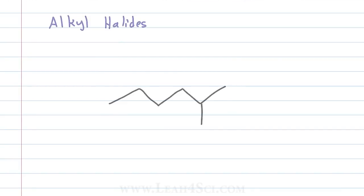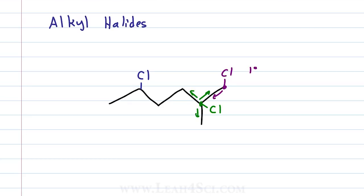Alkyl halides are classified the same way. Say I have a molecule with multiple chlorine atoms and I want to identify the degree of substitution of each one. Starting with the purple chlorine on the right — putting the pencil down, I have just one line, one bond to carbon, making it a primary alkyl halide. The green chlorine sits on a carbon that has three lines coming out of it — three bonds to carbon — making it a tertiary alkyl halide. Finally, the blue chlorine sits on a carbon that has two lines, two bonds to carbon, making it a secondary chloride.